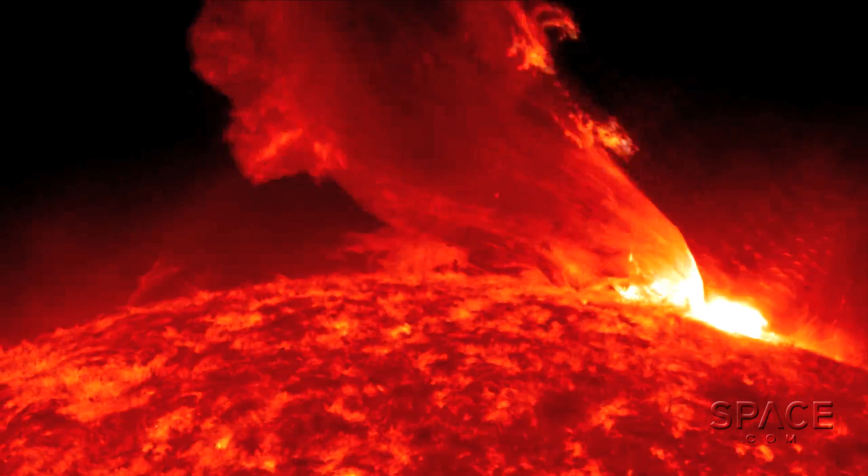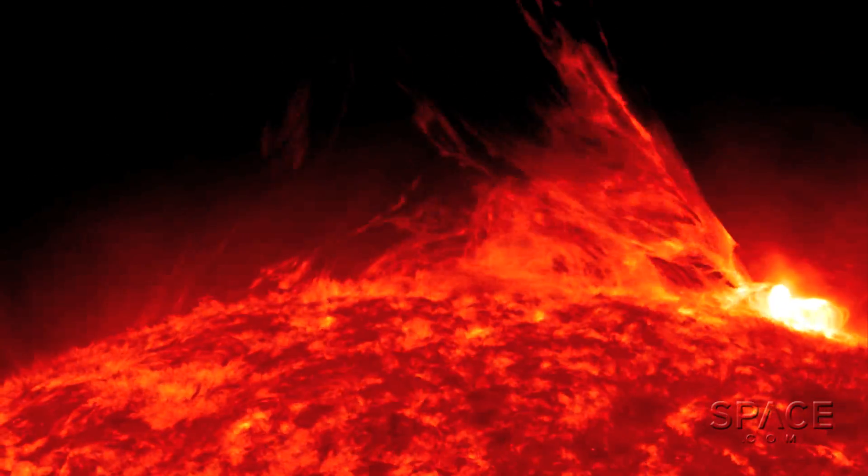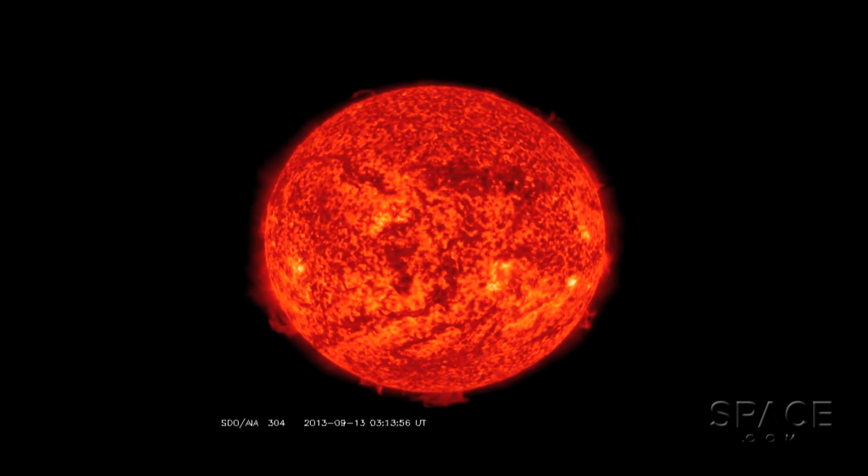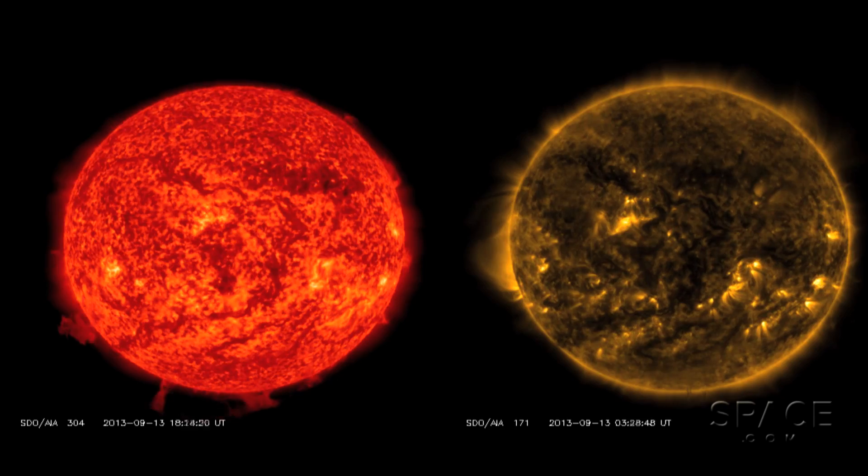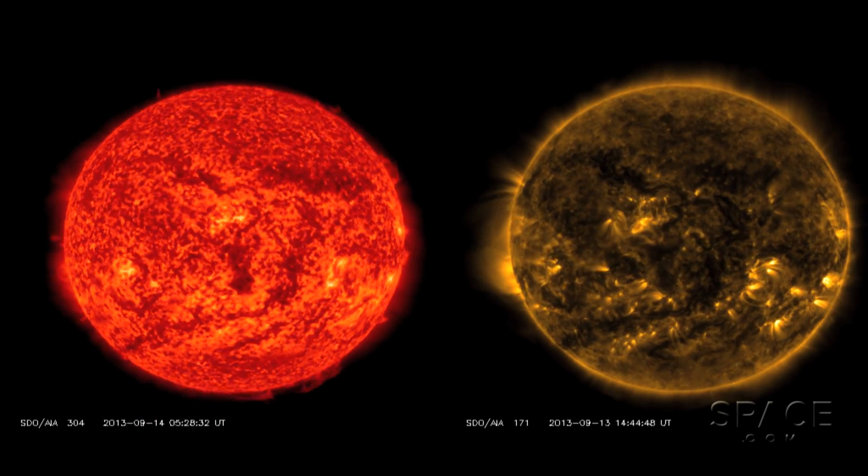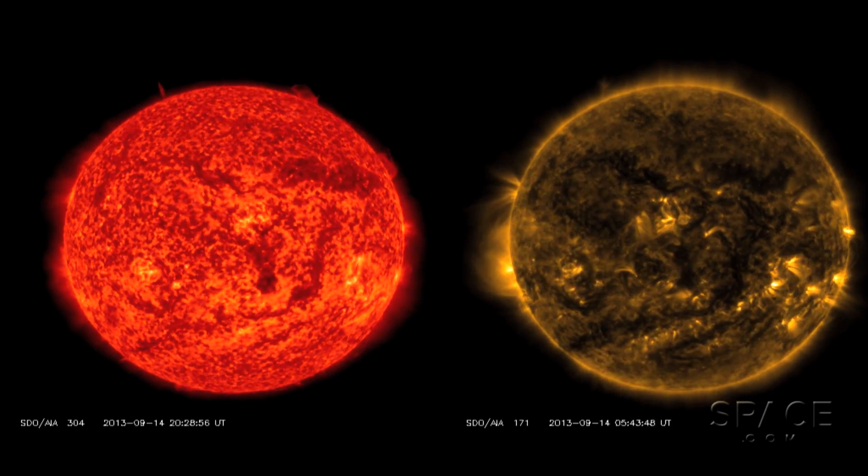This is supposed to be the time of the solar maximum, a peak in the roughly 11-year cycle of solar activity. But right now, astronomers are seeing very few large solar flares and practically no output of X-rays, both of which are usually tell-tale signs of the solar max.